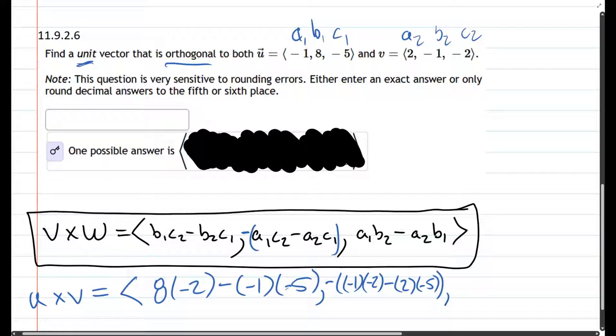Now for the z coordinate, a1 is negative 1, times b2 which is negative 1 also, minus a2 which is 2, times b1 which is 8.